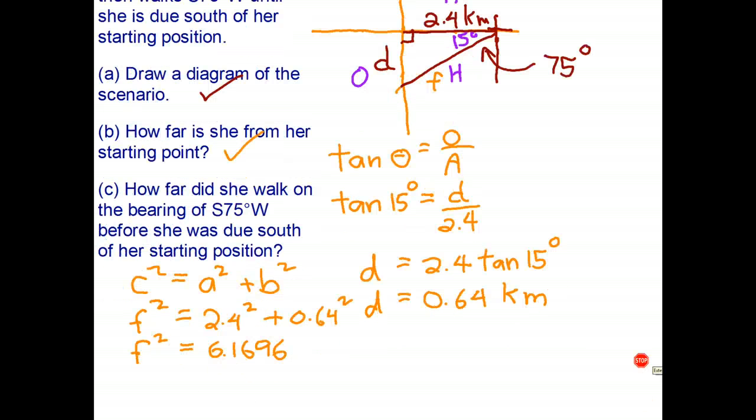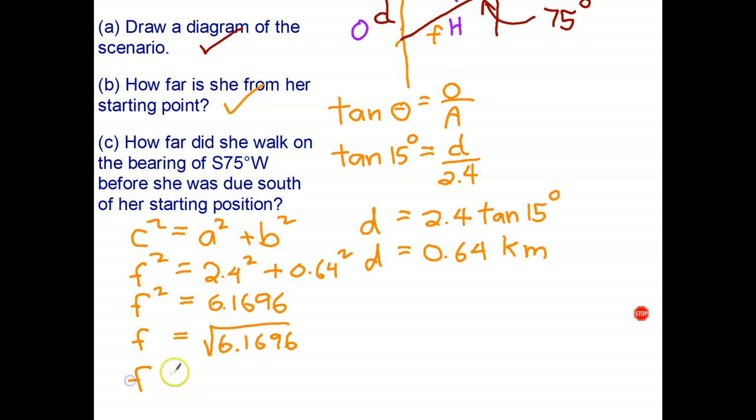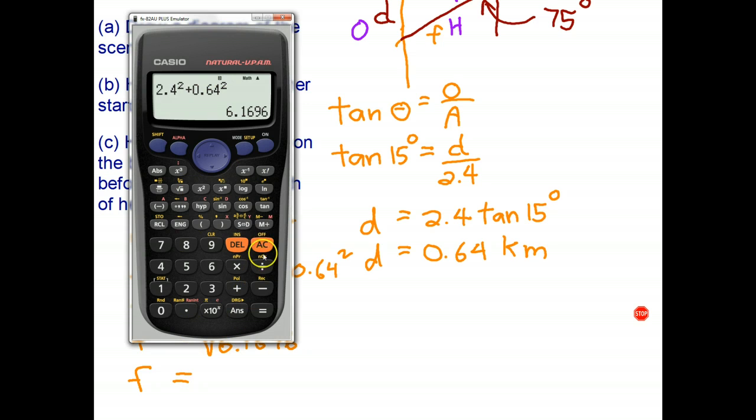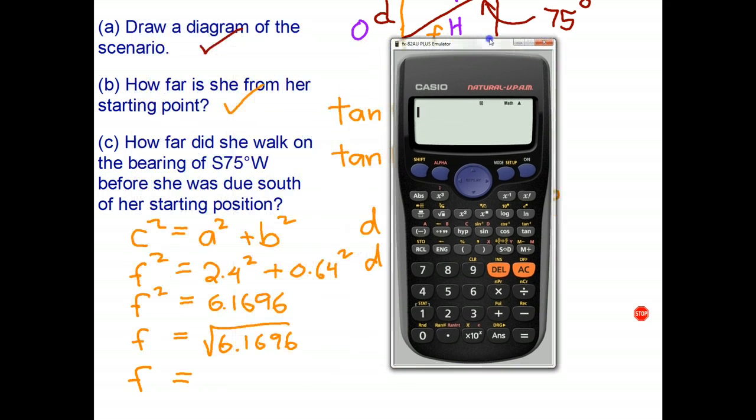And then we finish it off, take the square root of both sides. Square root 6.1696, and I'm probably going to round that off again to two decimal places. So 2.48 kilometers.